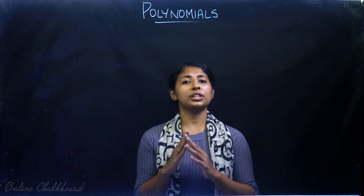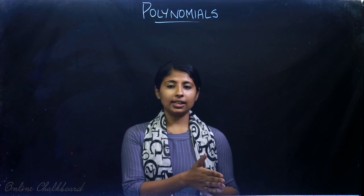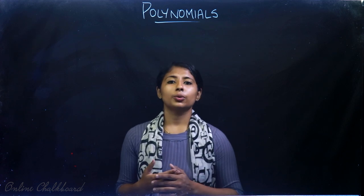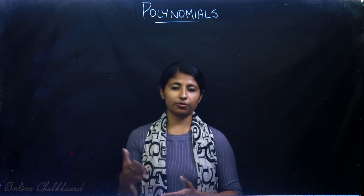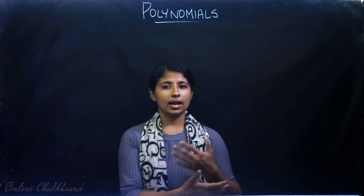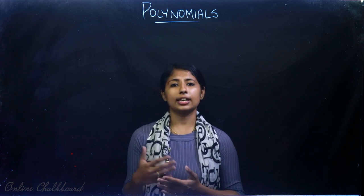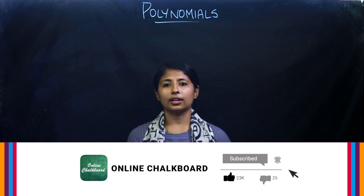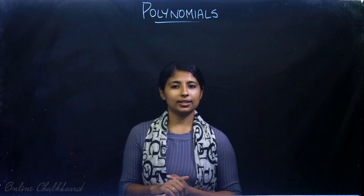We can wind up for today. We discussed what is the relation between zeros of a polynomial and the coefficients of the polynomial, solved a few questions, and understood how to find a polynomial using the sum and product of the zeros. In the next class we will be discussing Exercise 2.2. If you have any doubt, comment in the comment box, and if you find it useful, do share this with your friends.